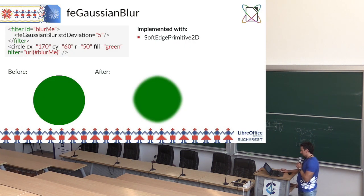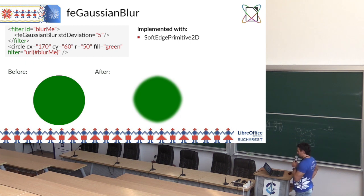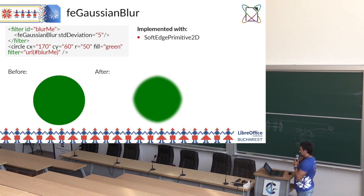This is the blur filter — the one I mentioned before. This is a really simple example. Basically we have a circle using the filter attribute with a URL to the filter. It's using a blur filter. This is the first one I implemented, and in order to do so I used the existing soft edge primitive.